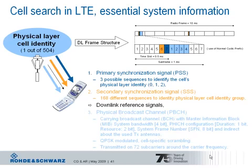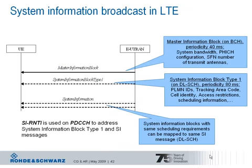Further information is required to execute the random access procedure and to enter the network. Regarding the physical broadcast channel: it has a transmission time interval of 40 milliseconds and can be found in every radio frame, but you need to decode the full 40 milliseconds to get the whole information. The repetition rate for synchronization signals is 5 milliseconds — every fifth subframe.